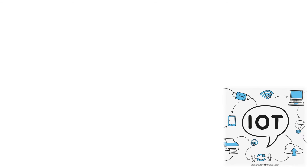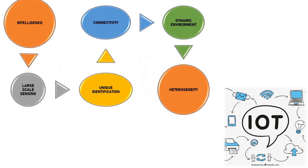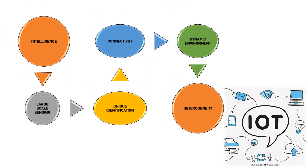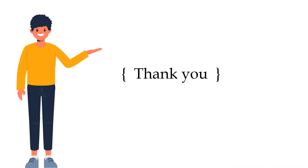Let us discuss other additional characteristics of IoT. Those are: 1. Intelligence, 2. Large-scale sensing, 3. Unique identification, 4. Connectivity, 5. Dynamic environment, 6. Heterogeneity.